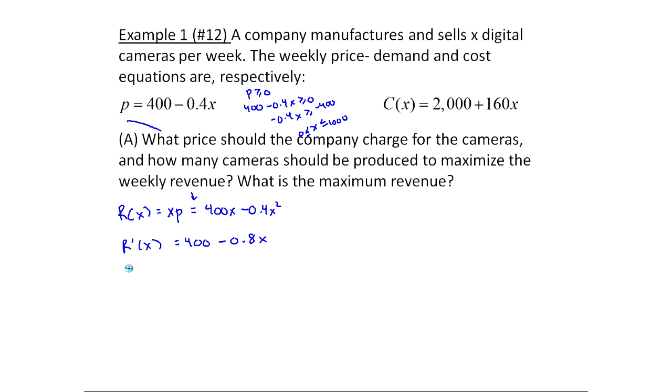Where is it equal to zero? Well, r prime of x equals zero when 400 minus 0.8x equals zero. In other words, when minus 0.8x equals minus 400. In other words, when x equals 500. So this is our critical value.